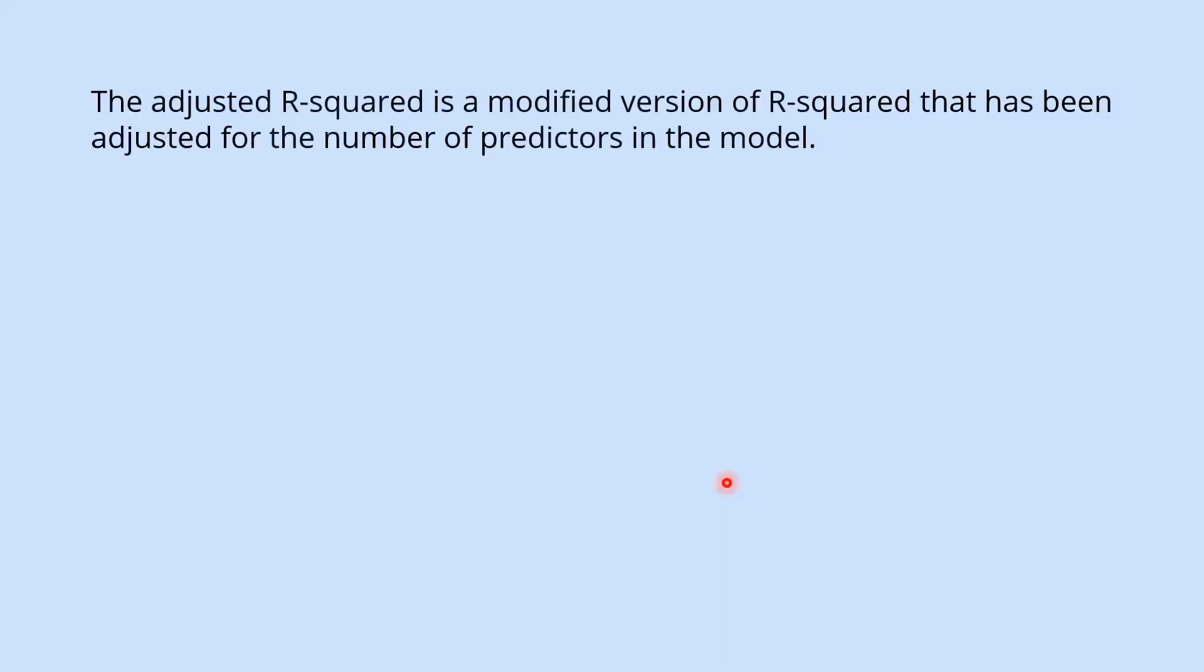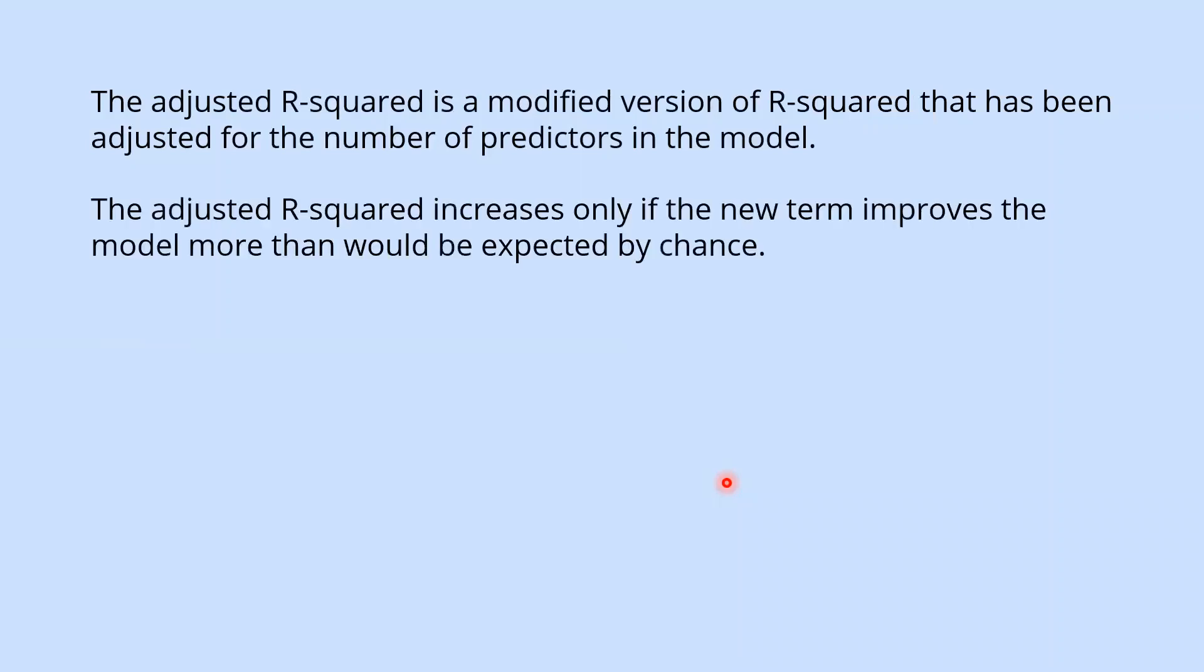The adjusted R2 is a modified version of R2 that has been adjusted for number of predictors in the model. The adjusted R2 increases only if the new term improves the model more than would be expected by chance.